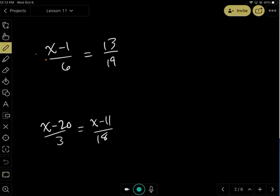You may think to yourself, oh, I'm going to multiply by the reciprocal on both sides. Don't do this. I'm just going to show you guys what this does. This makes x minus 1 equals 13 times 6.